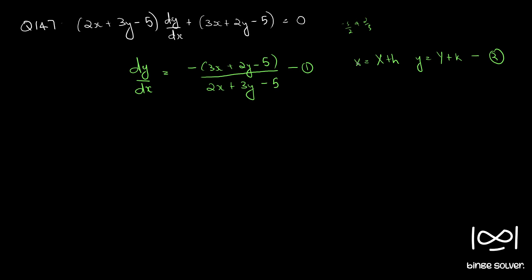Using equation 2, if we differentiate, we get small dx equal to d capital X, and small dy equal to d capital Y. Therefore, dy by dx equals d capital Y by d capital X. Let's call this equation 3.